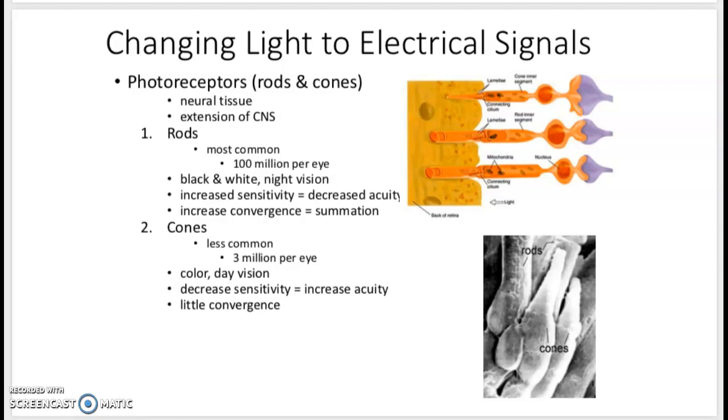This occurs because we have photoreceptors that can detect the stimulus, which is the wavelength of light. We have two types, rods and cones. Rods are more common, 100 million in each eye. These give you your black and white vision, your night vision, but they are not very specific. They have decreased acuity or discrimination. Their signals all converge together, so they're not quite as specific.